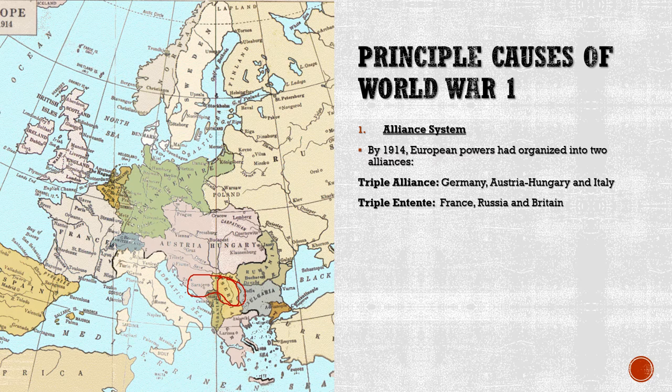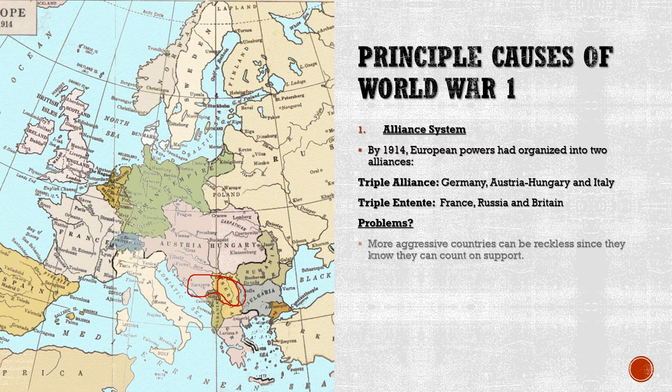Russia did not want to see Austria-Hungary become more powerful at the expense of Serbia, so when Austria-Hungary declared war on Serbia, Russia came to their defense. Germany, being allied with Austria-Hungary, declared war on Serbia as well. France, allied with Russia, declared war when Russia got involved. You can see what happens — a domino effect, with country after country dragged into the conflict. One main problem with the alliance system is that more aggressive countries can afford to be reckless since they know they can count on support.